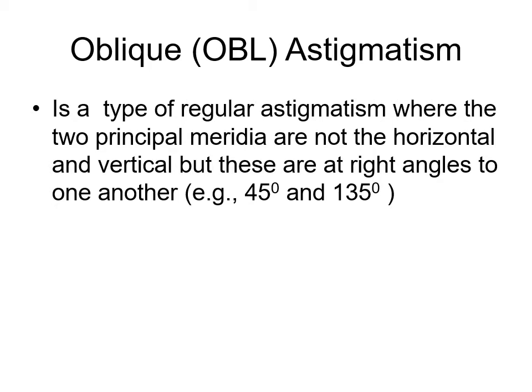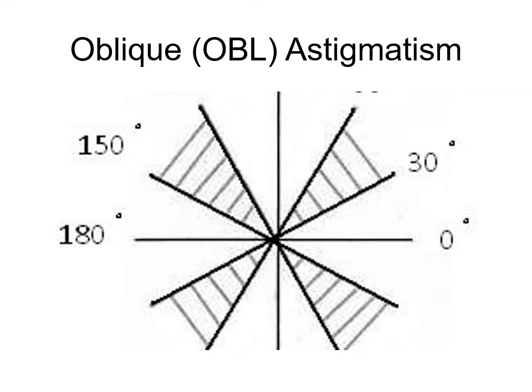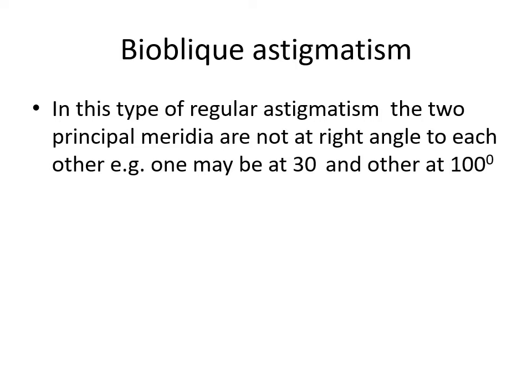Oblique astigmatism is a type of regular astigmatism where the two principal meridians are at right angles to one another but not at the routine 90° or 180°. They can be at 45° and 135°, for example — their sum is 180°. Bi-oblique astigmatism is where the two principal meridians are not at right angles to each other; for example, one may be at 30° and another at 100°, so their sum does not equal 180°.